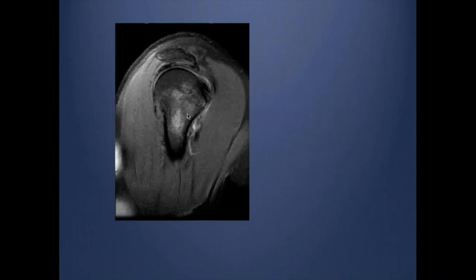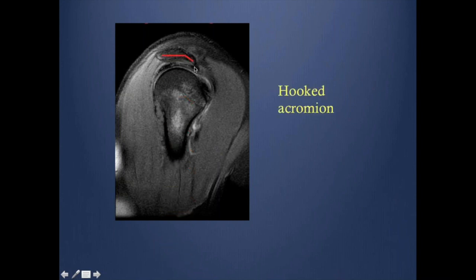Abnormal shape of the acromion — if you see this configuration, which we call the hook morphology, this is at risk of causing impingement. This is what we call a hook acromion.